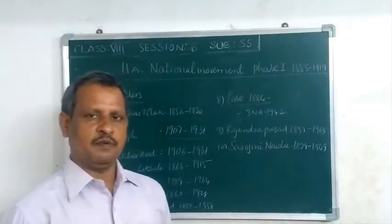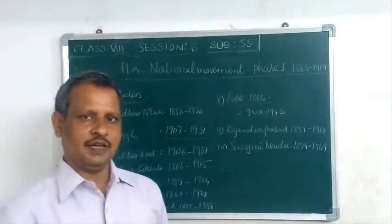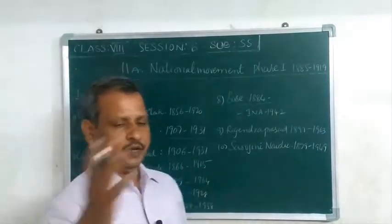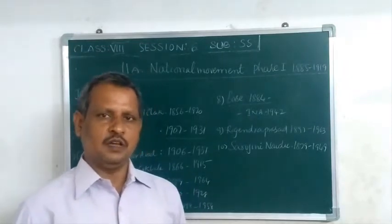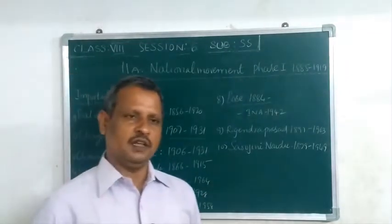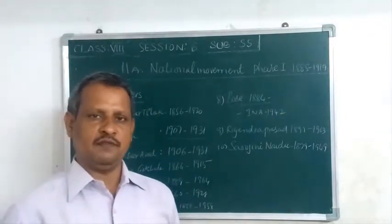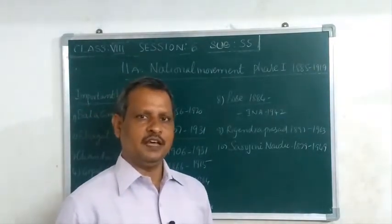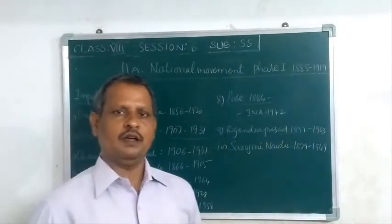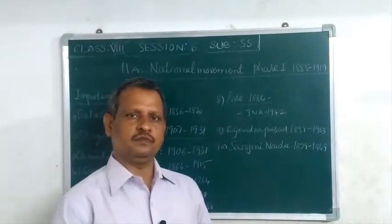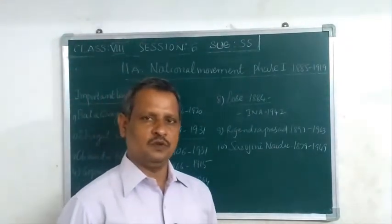In 1905, Bengal was divided into East Bengal and West Bengal. This triggered active participation and mass movements. Students boycotted schools, gave up scholarships, and government officers left their posts in protest against the partition.